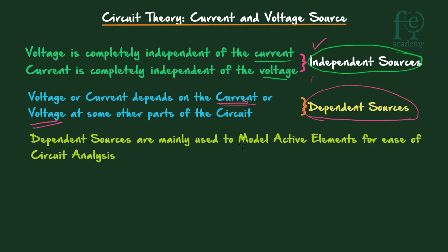Dependent sources are mainly used to model active elements for ease of circuit analysis. You may wonder why we use dependent sources — practically we cannot observe them directly. But they are very useful in modeling elements like transistors, op-amps, and ICs in circuit analysis. Always remember that dependent sources are mainly used for modeling of active elements.